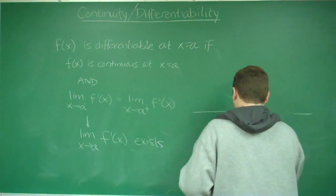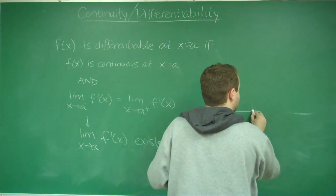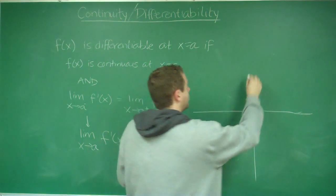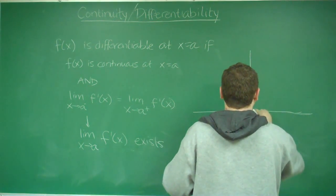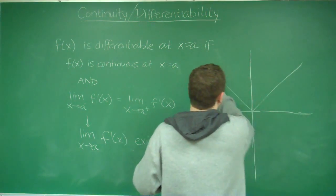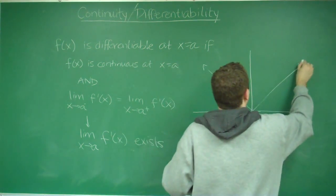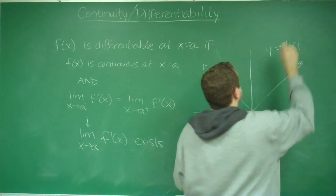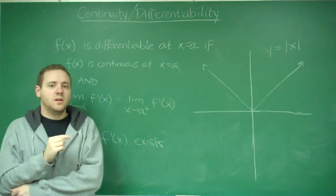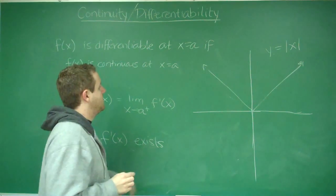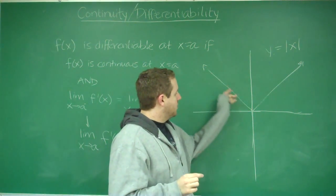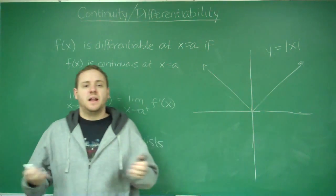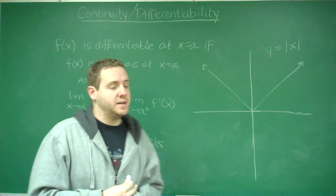And the easiest example of this is a function you're probably very familiar with. And this is the function y equals absolute value of x. So, this function is definitely continuous because at any given point, your function exists and it has the limits the same from both sides.